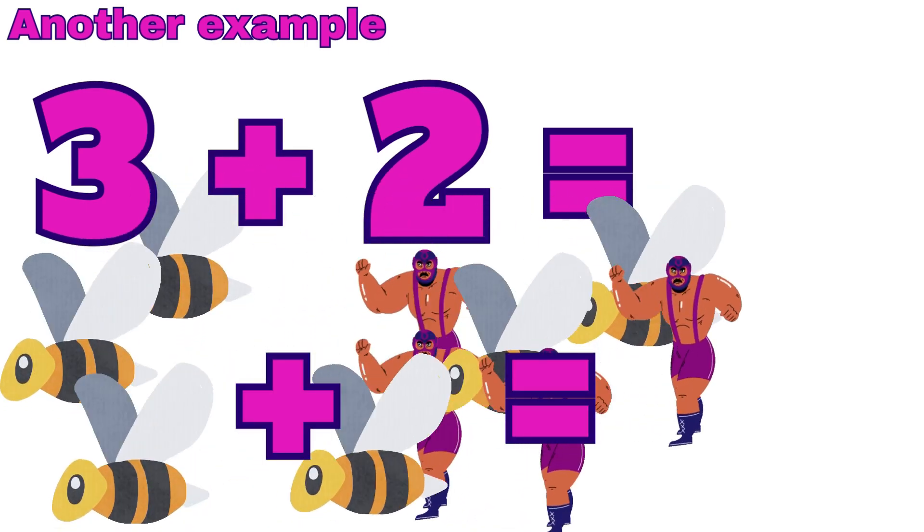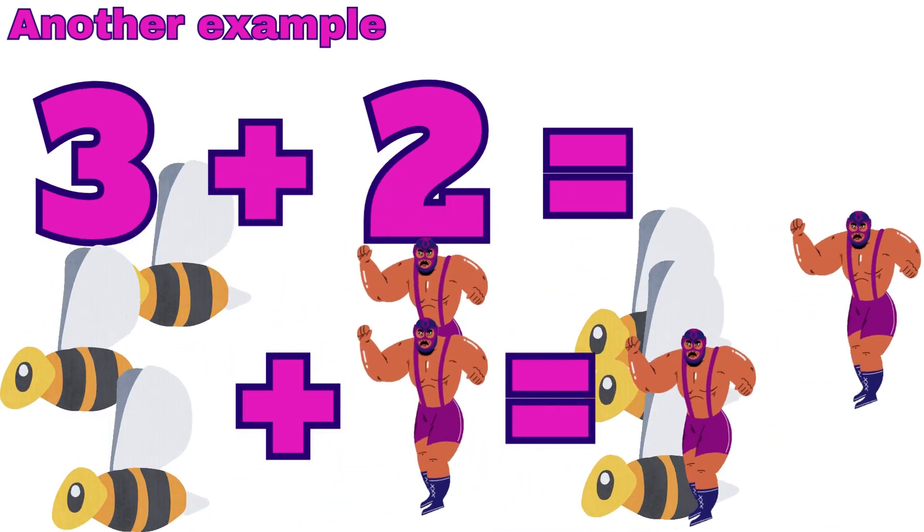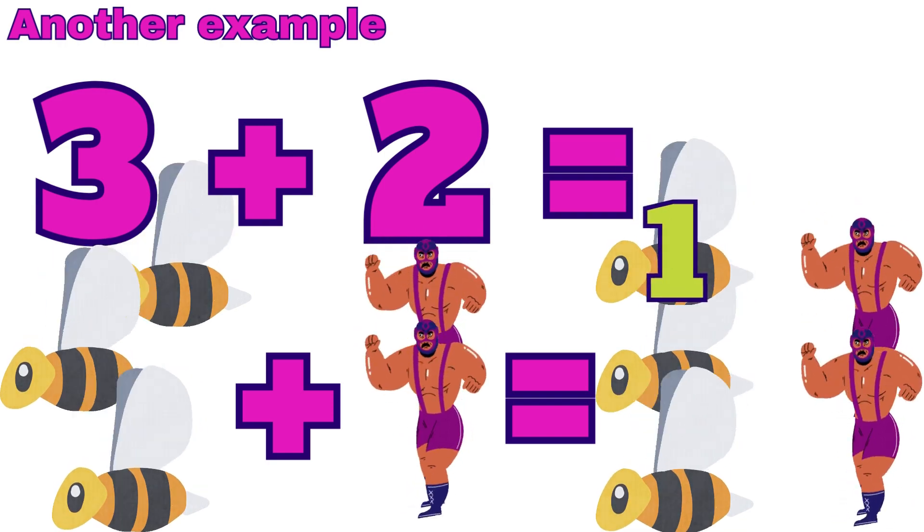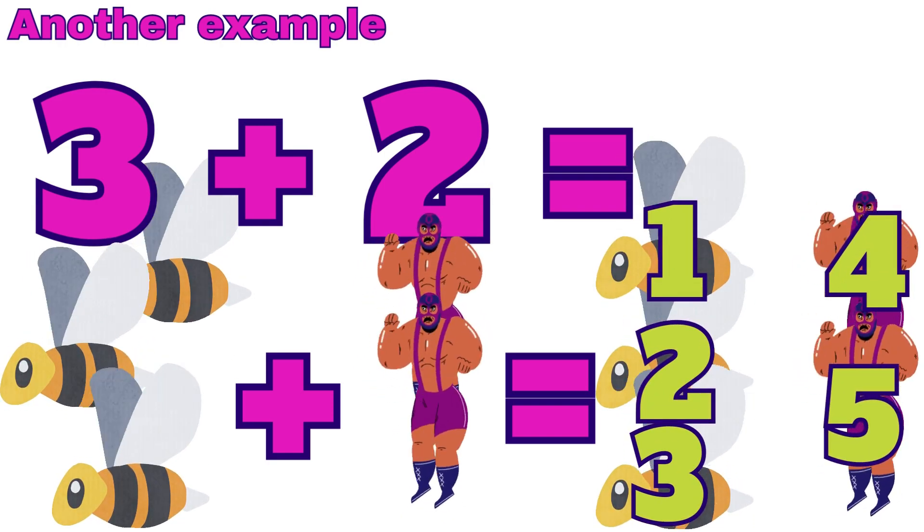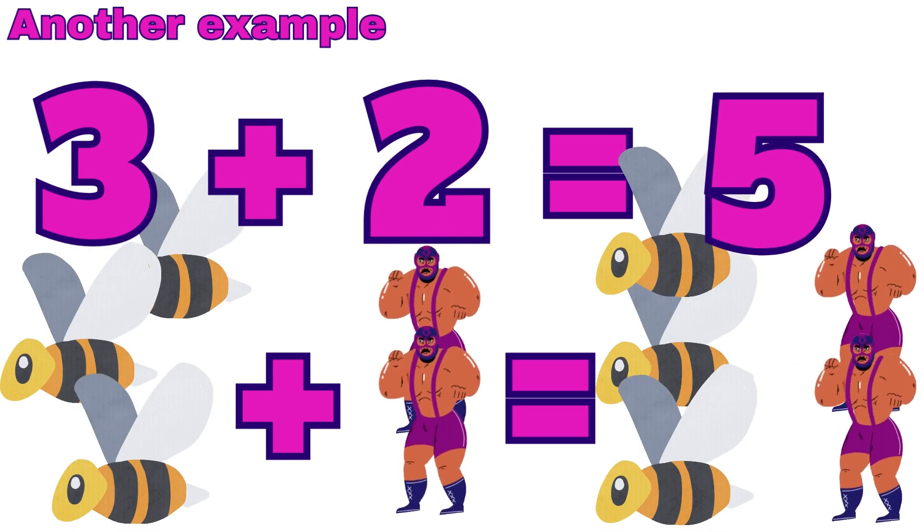If we add, combine, and count them all, the sum will be one, two, three, four, five. Five is the sum or total.